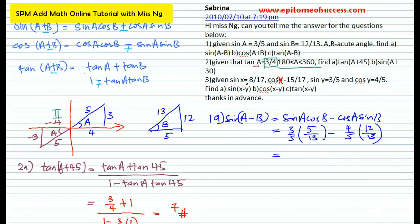Sine X is 8 over 17. From this information alone, sine is positive in the first quadrant and also positive in the second quadrant — using ASTC — so you don't know which one it is yet. Then they tell you cos X is negative 15 over 17. The moment you see negative for cosine, it has to be in the second or third quadrant. But because sine X is also positive, the only option is that X must be in the second quadrant — where sine is positive and cosine is negative.